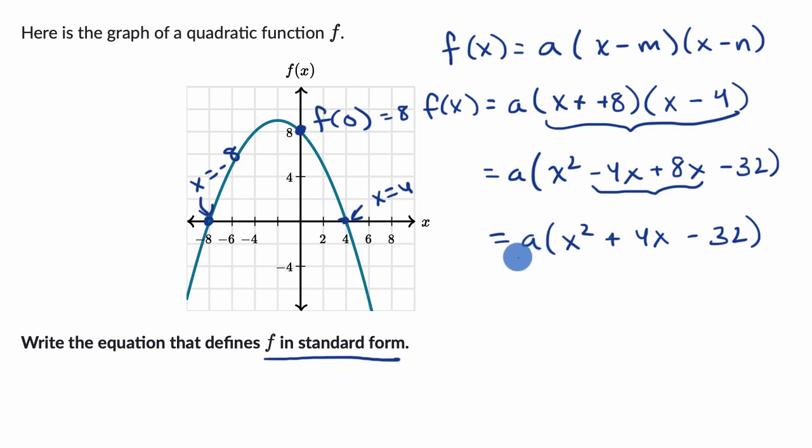Now we can multiply everything by a. This is going to equal ax squared plus 4ax, and then minus 32a. This is what f(x) is going to be equal to.